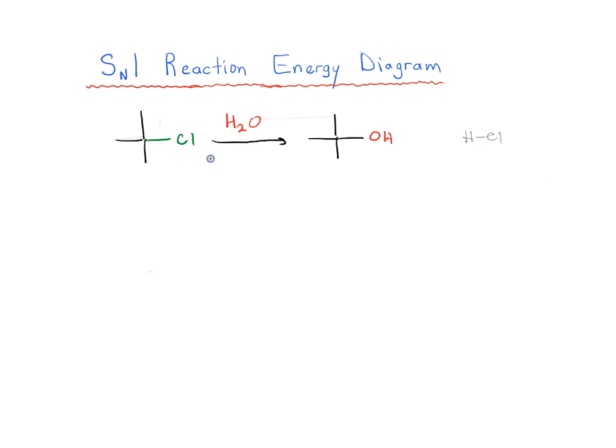Now, this is a reaction that goes through an SN1 reaction. Remember, the big barrier in the SN1 reaction is the formation of a carbocation, and this is a tertiary alkyl chloride.